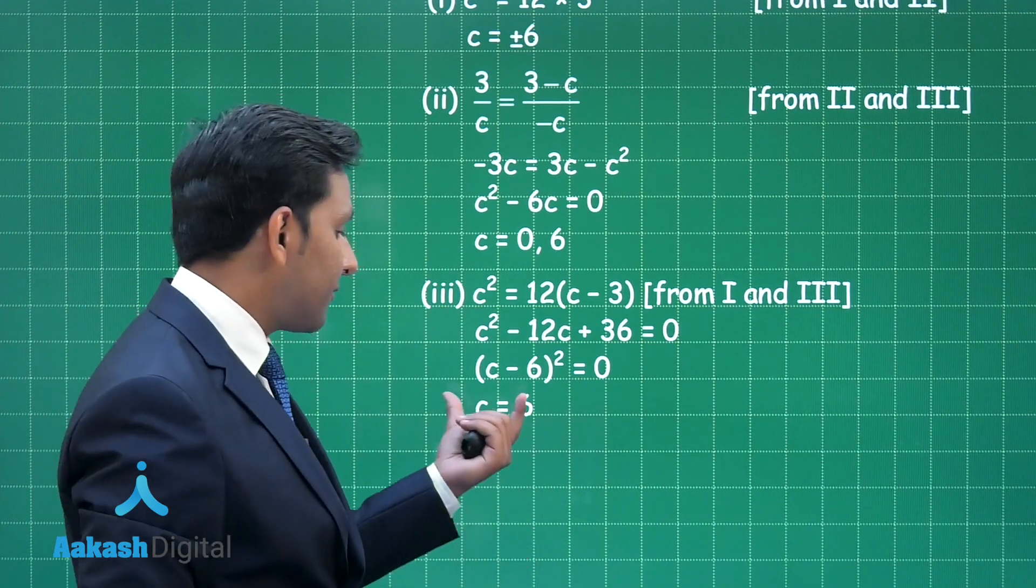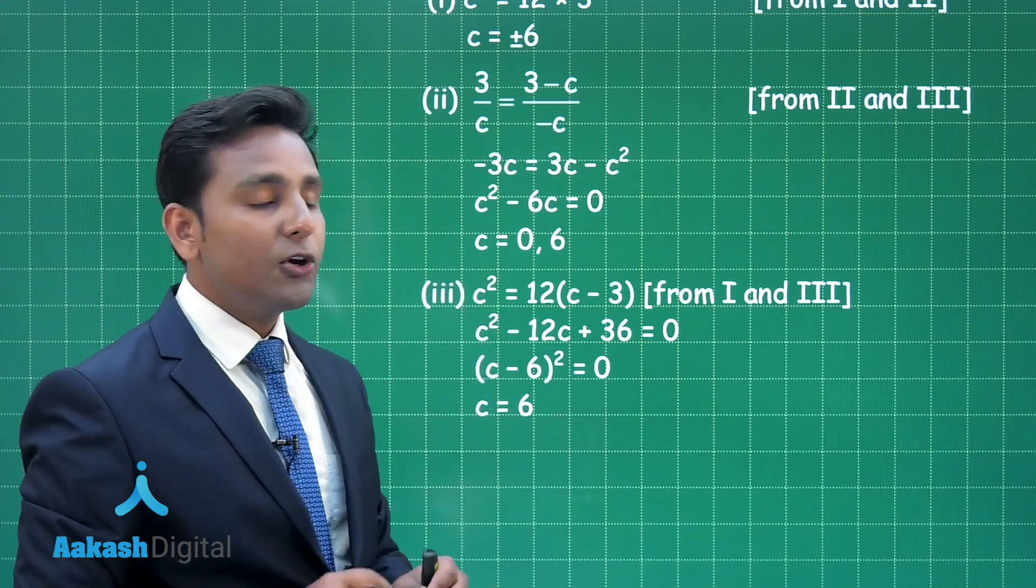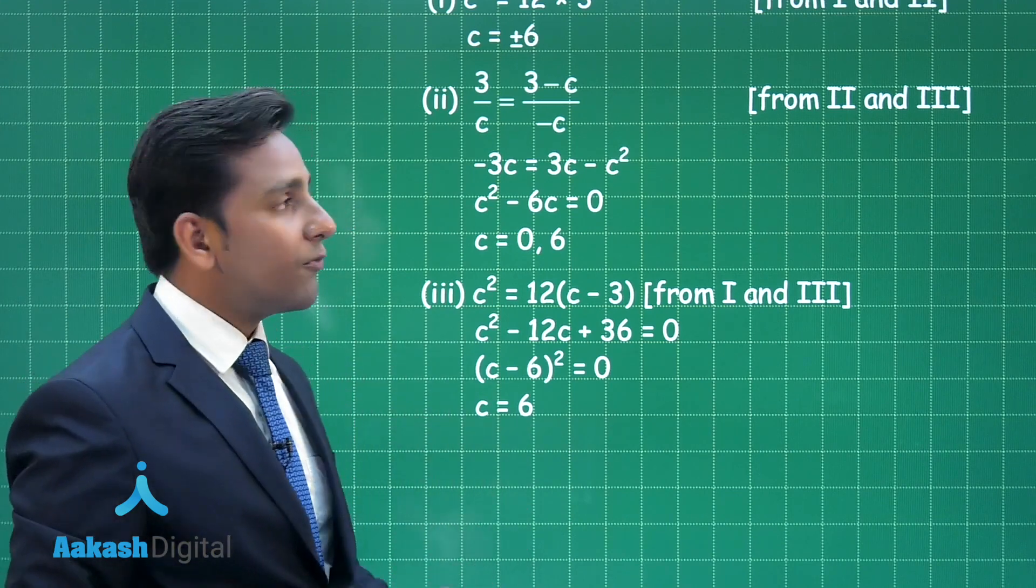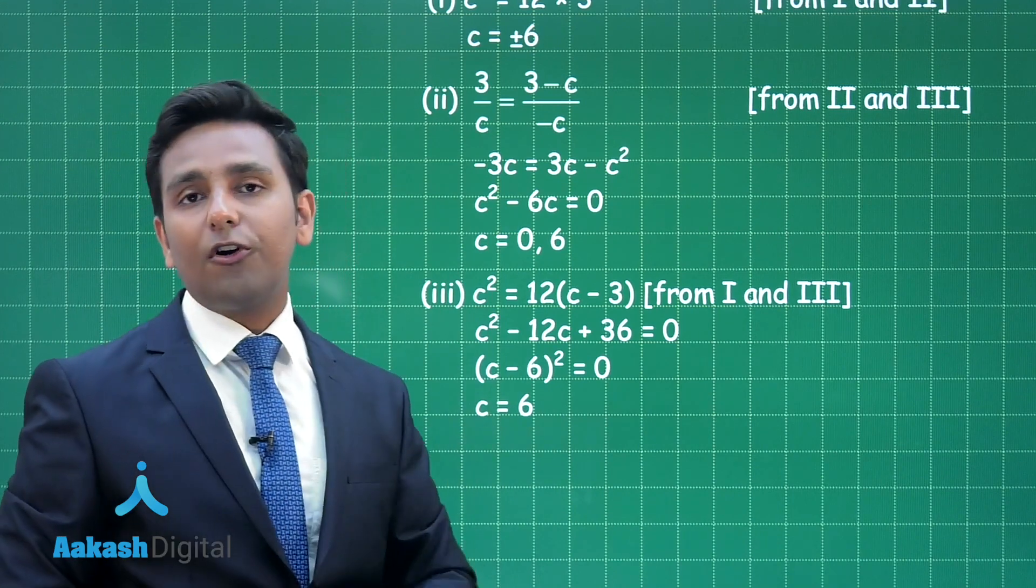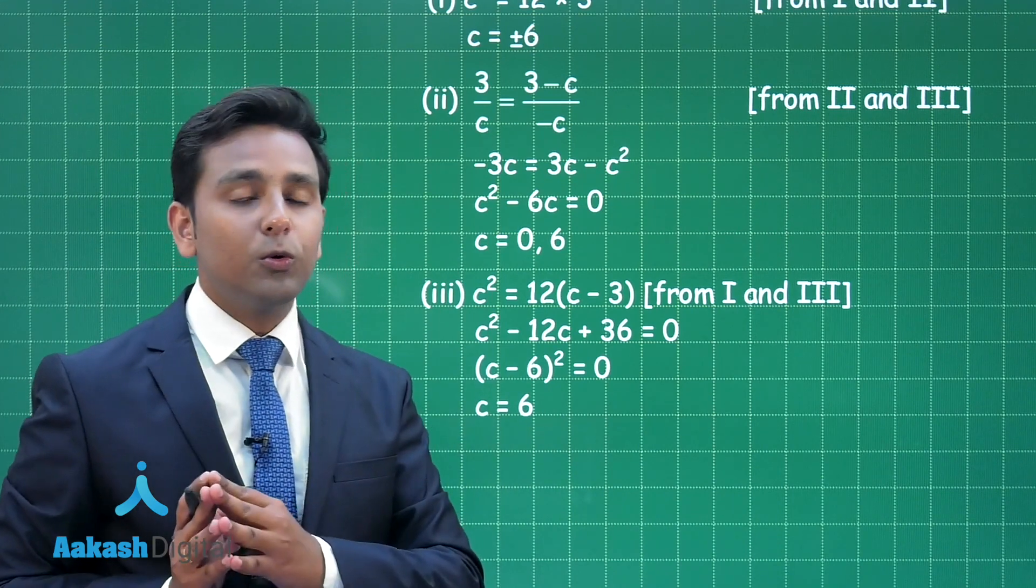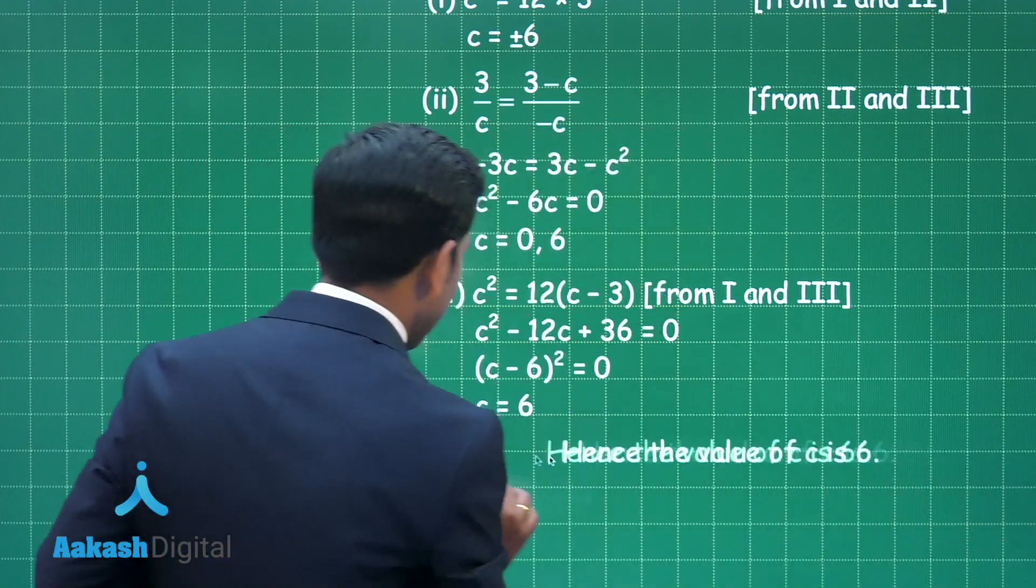So here from the last step you are obtaining only one value of C that is 6, and in the first and second step we are getting two values of C. So when you analyze the first, second, and the third step you can clearly conclude the value of C is equal to 6.